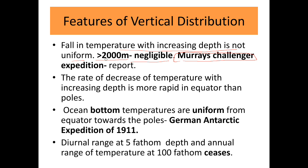Features of vertical distribution: the falling temperature with increasing depth is not uniform. Above 2000 meters the temperature drop is negligible, as identified by the Challenger Expedition report. The rate of decrease of temperature with increasing depth is more rapid at the equator than at the poles. Ocean bottom temperatures are uniform from equator towards the poles, as identified by the German Antarctic Expedition of 1911. Diurnal range can be measured only up to 5 fathom depth, and annual range of temperature can be measured up to 100 fathom depth; beyond that it ceases.